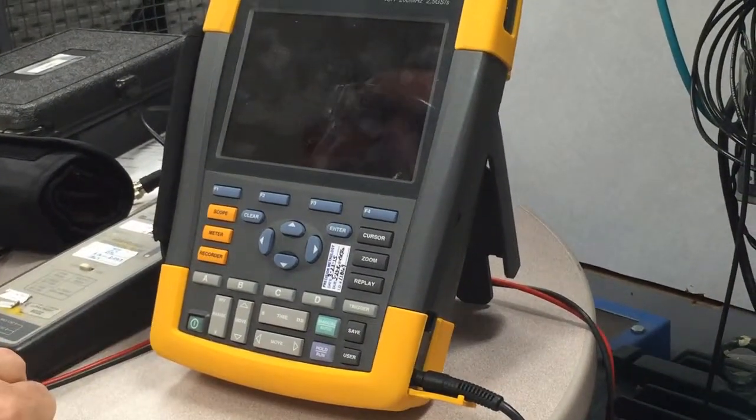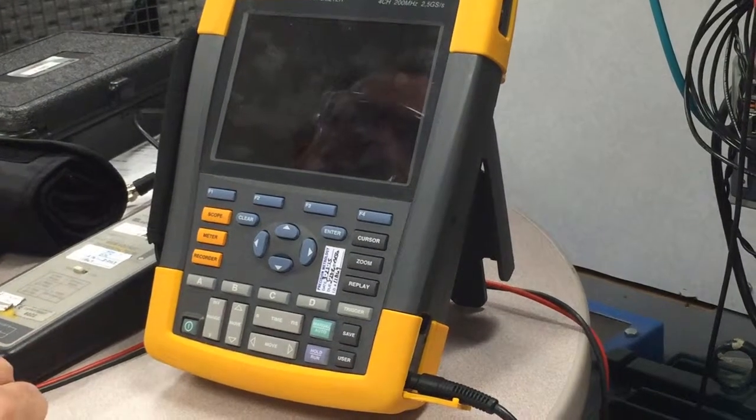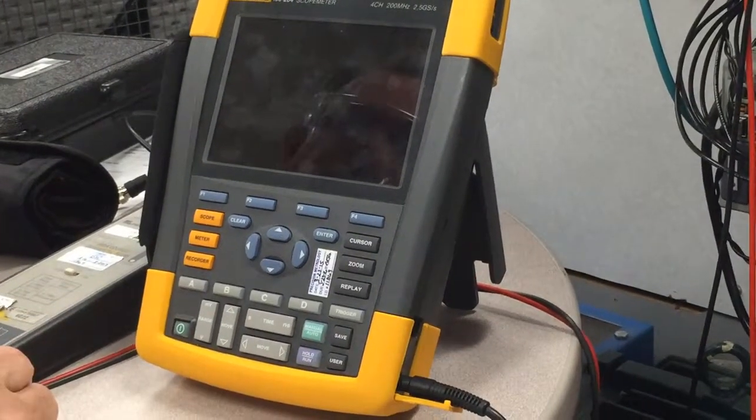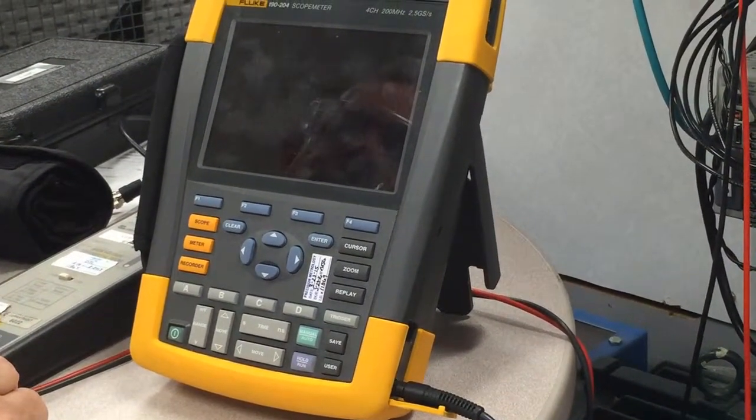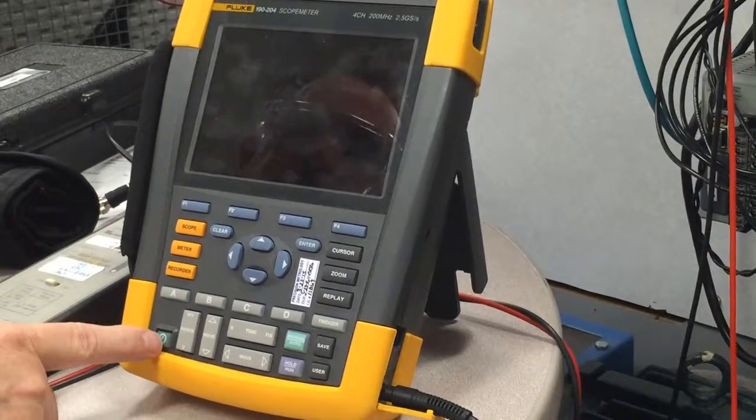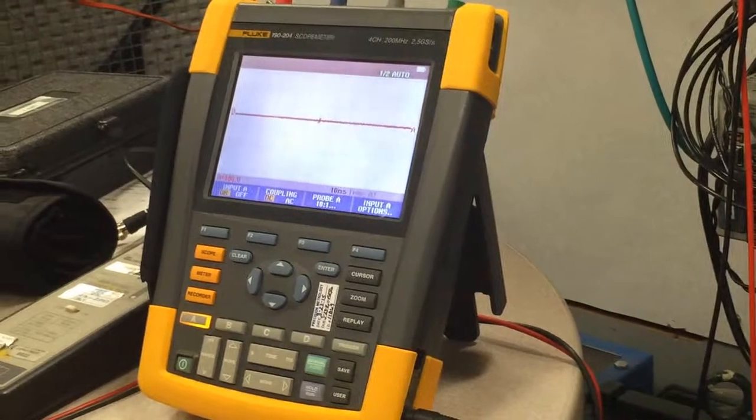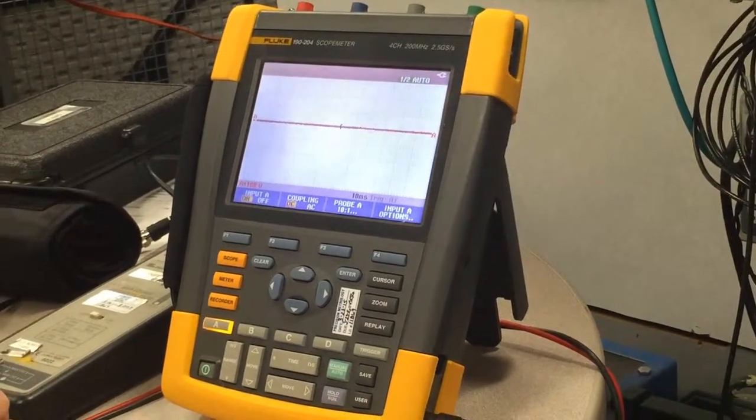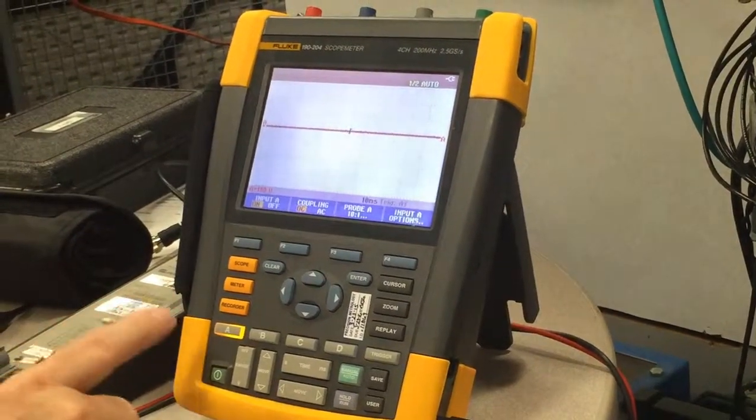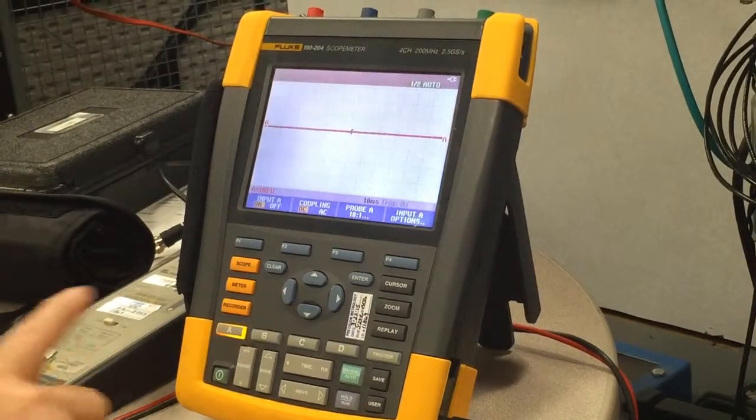In this demo, we're going to be connecting to the output of a VFD. So the first thing you want to do, of course, is turn on the scope meter. And then what I like to do, because you never know how the scope meter was set up before, is I like to reset to factory defaults.